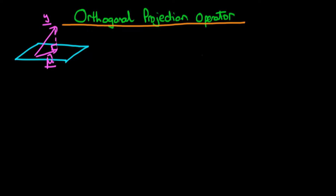In this video we're going to continue our discussion of the orthogonal projection operator. At the end of the last video, what we were trying to prove was that if we operate on a vector which already lies in the column space of X — for example μ̂, because we know μ̂ has to lie in the column space of X — then the orthogonal projection operator applied to that vector should just return that vector.